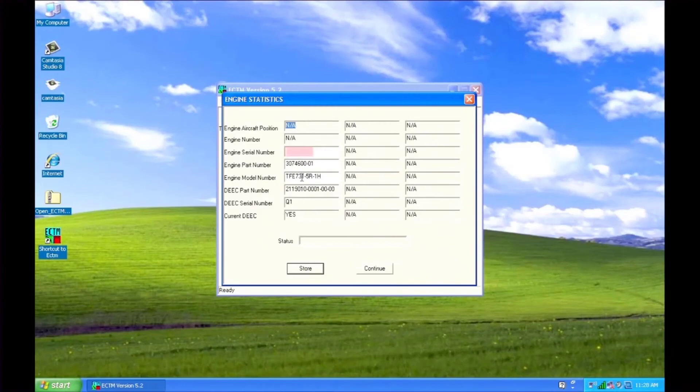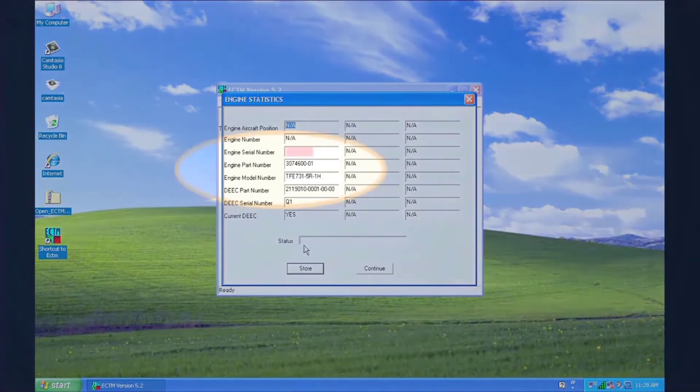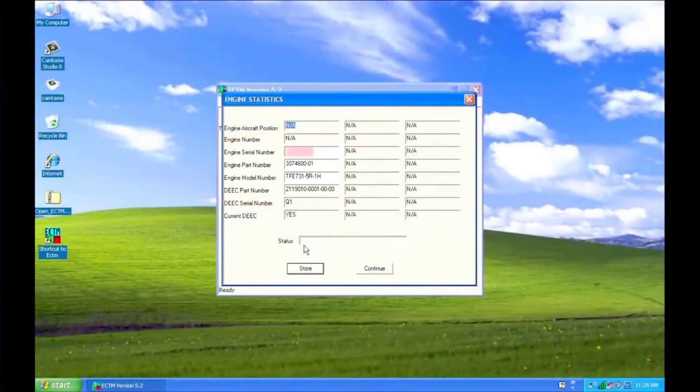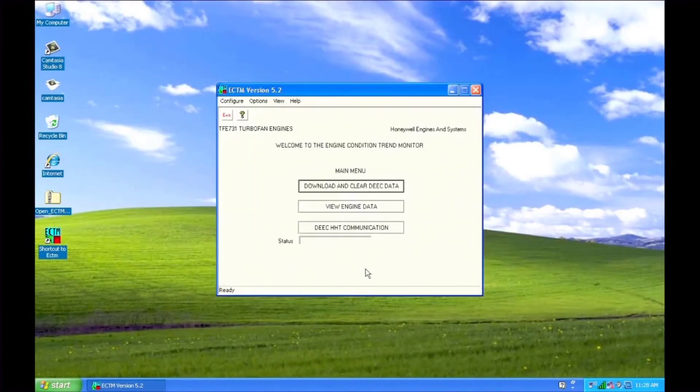In the engine statistics window, enter the engine serial number, part number, and model number. The engine model number is case sensitive. Store the data, close the program, and power down the aircraft for at least one minute.